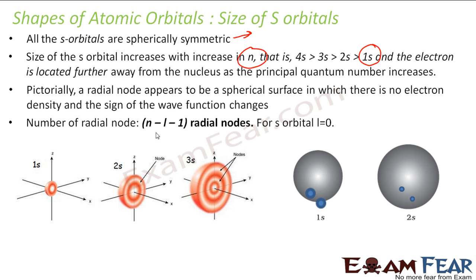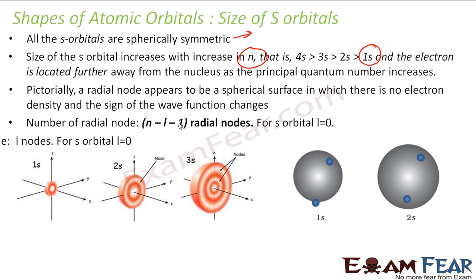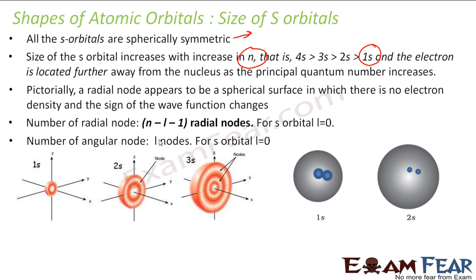The number of radial nodes is given by N minus L minus 1. For S orbitals, L is 0, so the number of radial nodes is N minus 1. For N=1, there are 0 radial nodes; for N=2, there is 1; for N=3, there are 2. The number of angular nodes is given by L. For S orbitals, L=0, so there are no angular nodes.